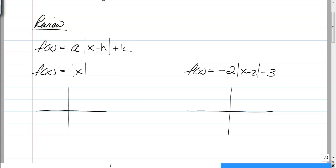You probably remember absolute value graphs have the form A times the absolute value of X minus H plus K, or a normal, just straight absolute value of X looks like a V. But when we performed an X minus 2 and then a minus 3 on the outside and a negative 2 in front, a few things happened.